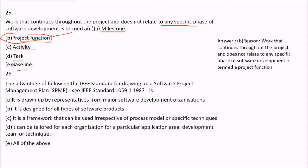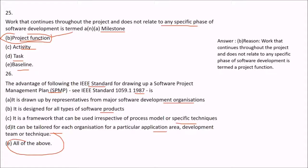Question 26: The advantage of following the IEEE standard for drawing up a Software Project Management Plan (SPMP IEEE 1059.1-1987) is what? It is drawn by representatives from major software development organizations — true. It is designed for all types of software products — true. It is a framework usable irrespective of process model or specific techniques — true. It can be tailored to each organization for a particular application area, development team, or technique — true. So the answer is all of the above.